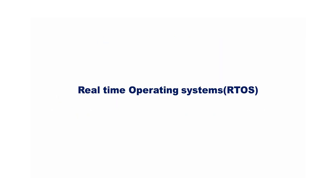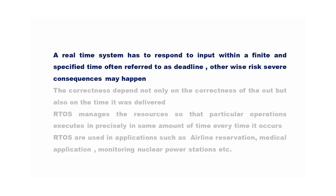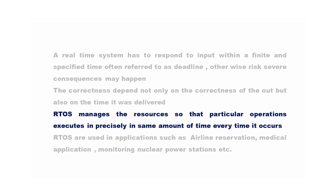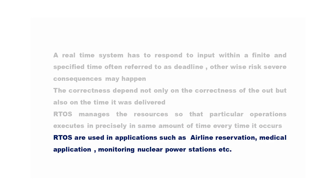The next type of operating system is a real-time operating system. A real-time system has to respond to input within a finite and specified time, often referred to as a deadline. Otherwise, severe consequences may happen. The correctness depends not only on the correctness of the output, but also on the time it was delivered. RTOS manages the resources so that particular operations execute in precisely the same amount of time every time they occur. RTOS are used in applications such as airline reservation, medical applications, and monitoring nuclear power stations.